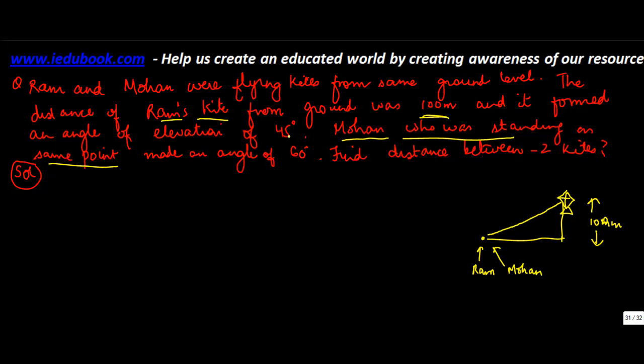It formed an angle of elevation of 45 degrees, so the angle of elevation means this is 45 degrees. Mohan, who was standing on the same point, made an angle of 60 degrees. 60 obviously is higher, so his kite should ideally lie somewhere here.